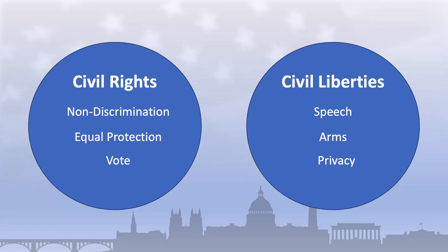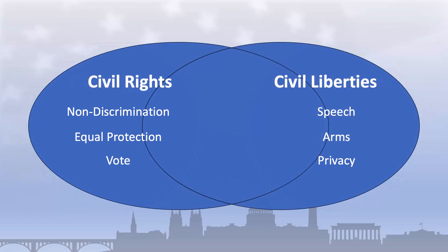It's important to remember that the distinction between civil rights and civil liberties is not always clear-cut, and there are cases where a law or policy can be seen as both a civil right and a civil liberty. For example, the right to education is often seen as a civil right, ensuring that everyone has the opportunity to get an education regardless of their background. However, it can also be seen as a civil liberty, as it protects the individual's right to choose their own education. Similarly, due process rights can be viewed both as civil rights — requiring that everyone is treated equally with no discrimination based on protected classes like race or gender — and as a civil liberty, as it protects individuals from undue or unjust government interference in their lives.